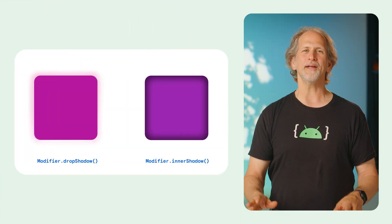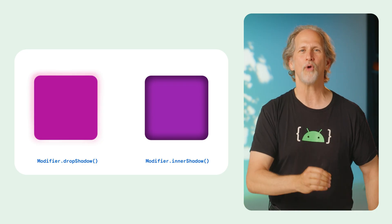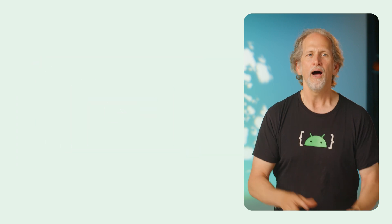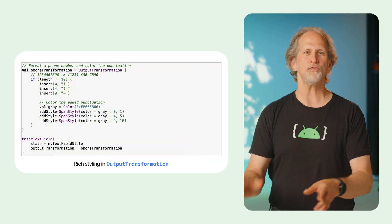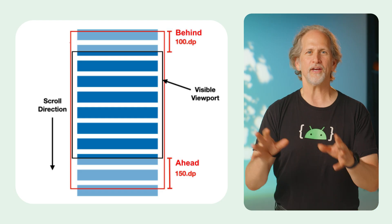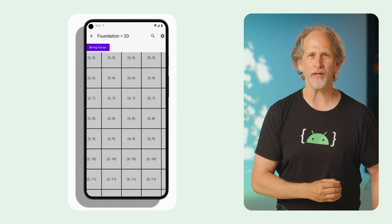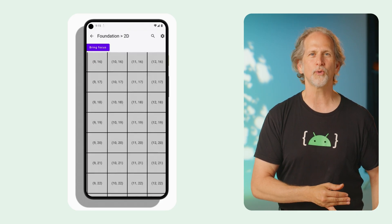Jetpack Compose 1.9 is now stable. This release introduces Modifier.dropShadow and innerShadow for rendering box shadow effects, onVisibilityChanged and onFirstVisible modifiers for tracking element visibility, output transformations using TextFieldBuffer.addStyle, a lazy layout cache window to enhance prefetching for improved lazy layout performance, and Scrollable2D to enable scrolling, flinging, and nested scrolling in 2D.